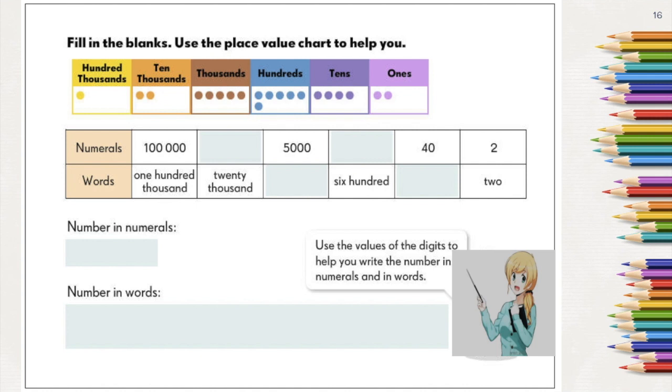Let's try to figure out what number is being represented by these discs in our place value chart. Here, we have two ones equal to 2, 4 tens has a value of 40, 6 hundreds or simply 600, 5 thousands has a value of 5,000, 2 ten thousands has a value of 20,000, and of course we have here 100,000. So the number can be written in standard form like this, and it is written in words like this. It is read as 125,642. Remember, use the values of the digits to help you write the number in numerals and in words.